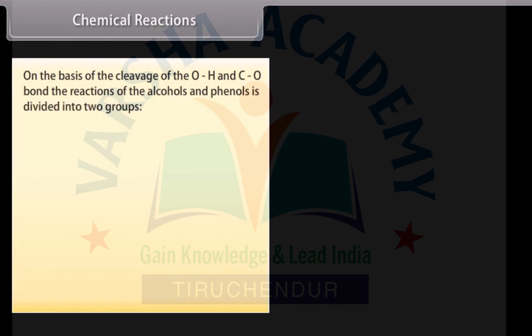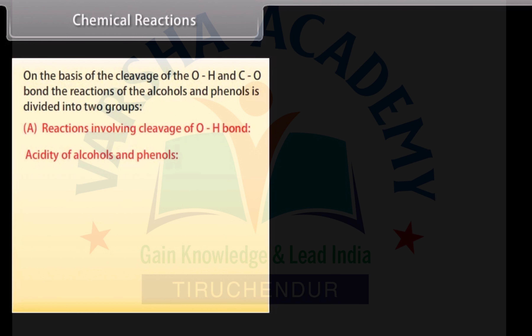On the basis of the cleavage of the O-H and C-O bond, the reactions of the alcohols and phenols are divided into two groups: reactions involving cleavage of the O-H bond, and reactions involving cleavage of the C-O bond. First, we consider the acidity of alcohols and phenols.